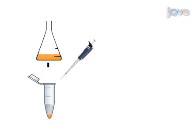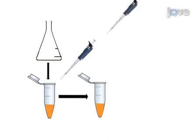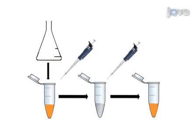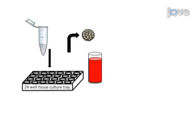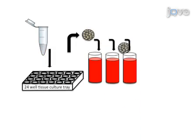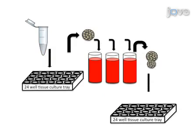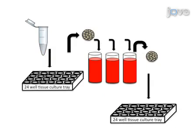Bacteria harvested from a standard broth culture are washed by centrifugation and then added to the host cell culture. Once invasion has occurred, extracellular bacteria are killed using gentamicin and the coverslips are washed and transferred to a new plate.